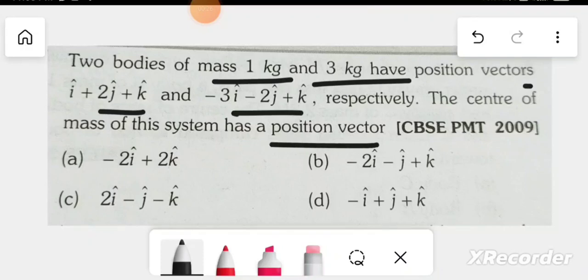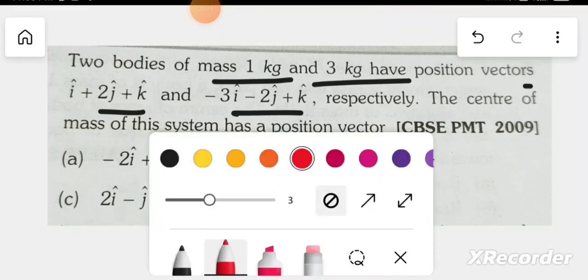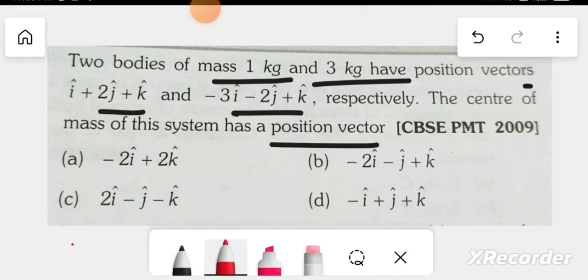M1 R1 position vector, R1 is equal to i plus 2j plus k. R2 position vector, R2 is equal to minus 3i minus 2j plus k.